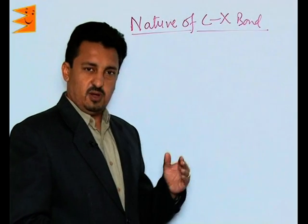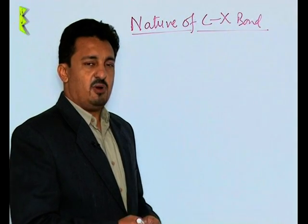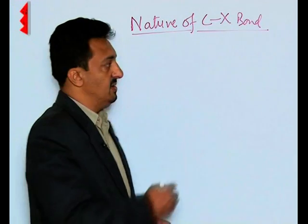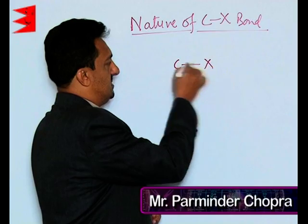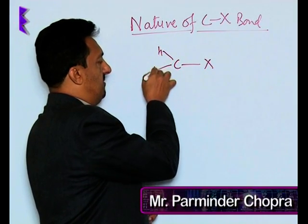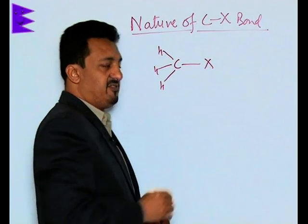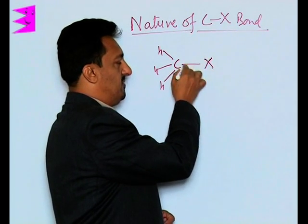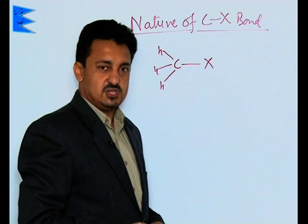The nature of the C-X bond: the C-X bond in alkyl halides is polar in nature. The carbon which has the halogen is sp3 hybridized, and due to this reason, the bond between the carbon and the halogen is polar.